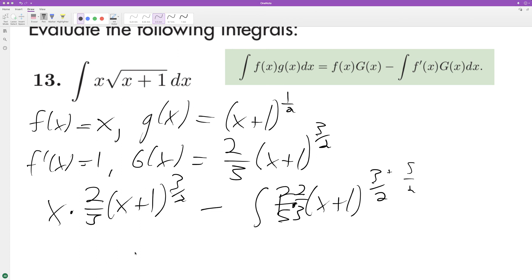x times (2/3)(x+1) raised to the 3/2, minus (4/15)(x+1) raised to the 5/2, and then plus C. And that's it! All righty, I hope this problem helped you out. Appreciate you watching. You have a great day.